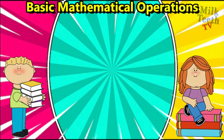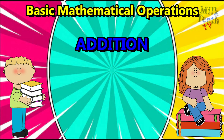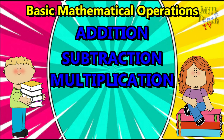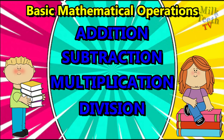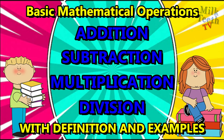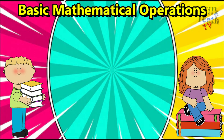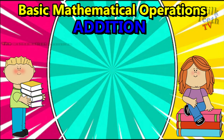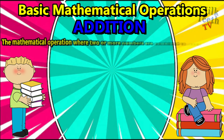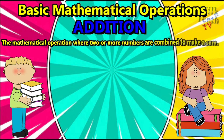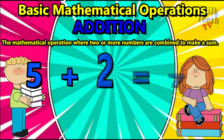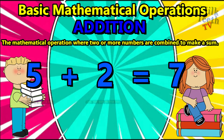We will cover basic mathematical operations: addition, subtraction, multiplication, and division with definitions and examples. Addition is the mathematical operation where two or more numbers are combined to make a sum. Let's take an example: five plus two is equal to seven.